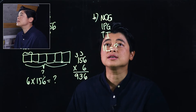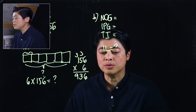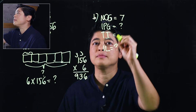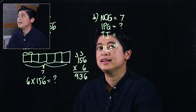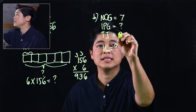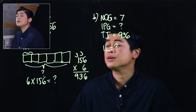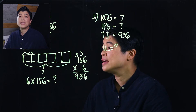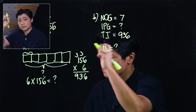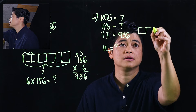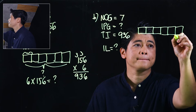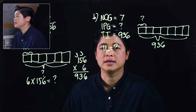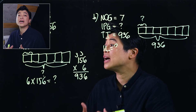We are putting the pens into seven containers, so that's seven groups. The items per group is the unknown, and we use 936 (the answer from part A) as our starting total. The bar model would show seven boxes with a total of 936, asking what each box contains.